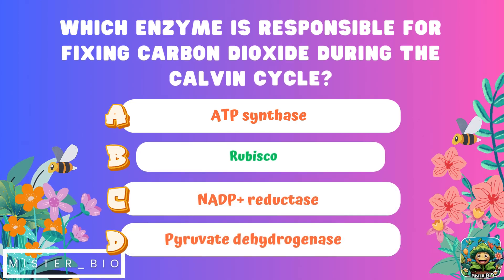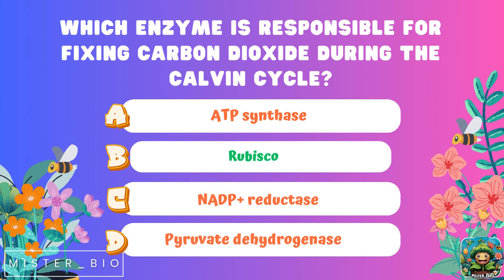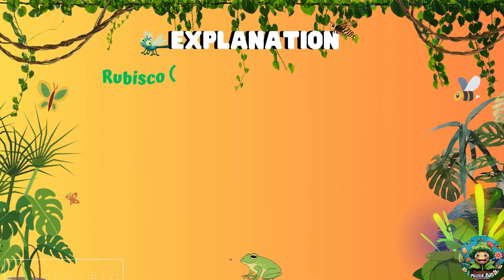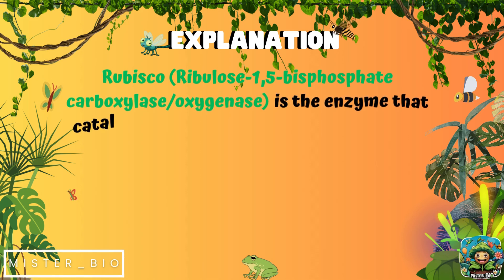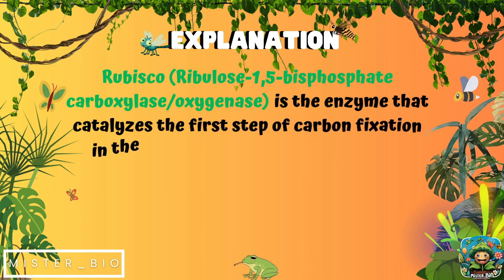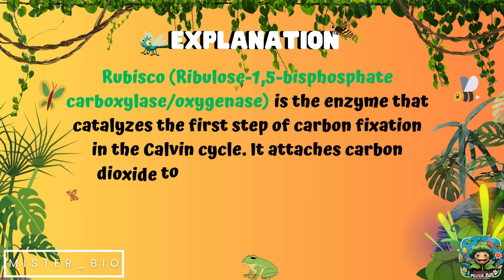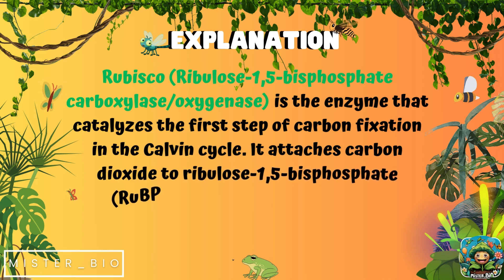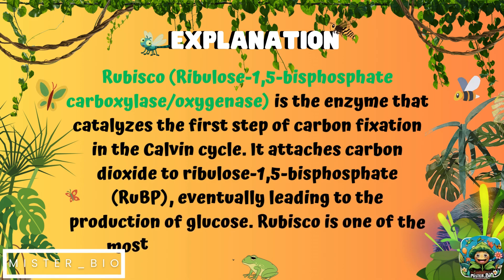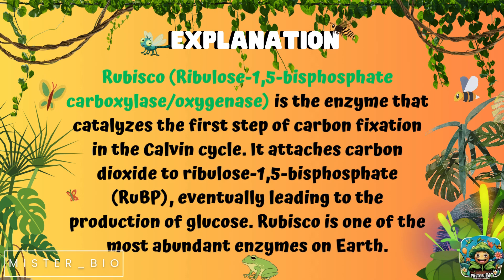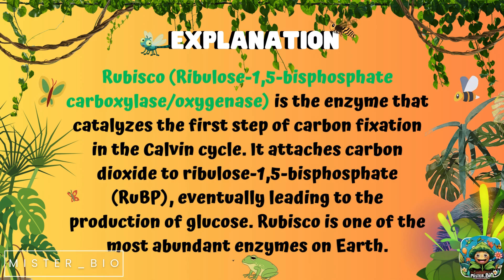The correct answer is B, RuBisCO. RuBisCO, or ribulose-1,5-bisphosphate carboxylase oxygenase, is the enzyme that catalyzes the first step of carbon fixation in the Calvin cycle. It attaches carbon dioxide to ribulose-1,5-bisphosphate (RuBP), eventually leading to the production of glucose. RuBisCO is one of the most abundant enzymes on earth.